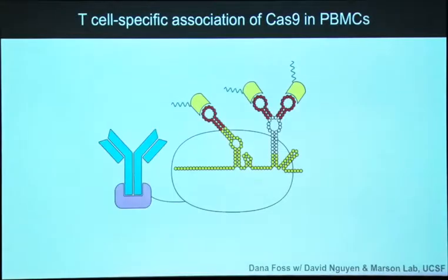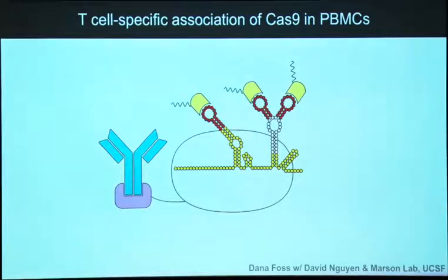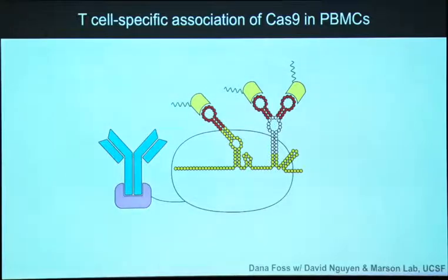We haven't gotten editing yet - I would be delighted to show you that. The next step is to find out what combination of Cas9 and peptides located at the surface is appropriate to activate this editing. We haven't tried this very exhaustively. T cells are a little bit tricky to edit in in vivo friendly ways, but that's the next big goal: to turn on the endosomal escape and enable genome editing in a targeted context.